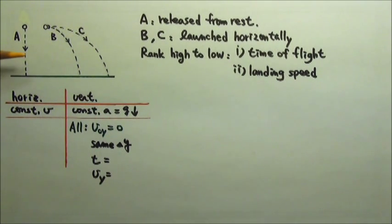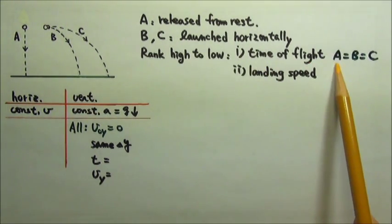If you look this way, you would only see their vertical motion. You would see all three objects start from rest and fall at exactly the same rate and land at the same time. So for the time of flight, they are all equal.